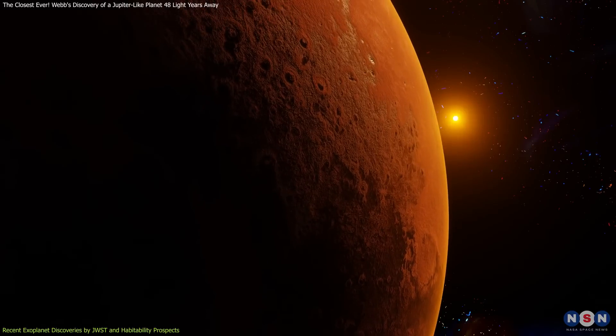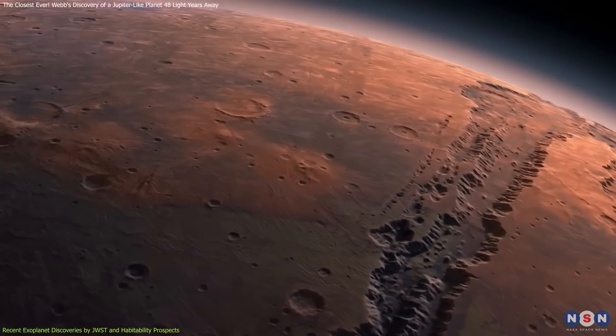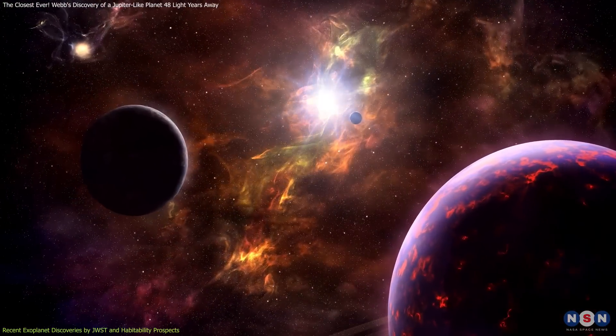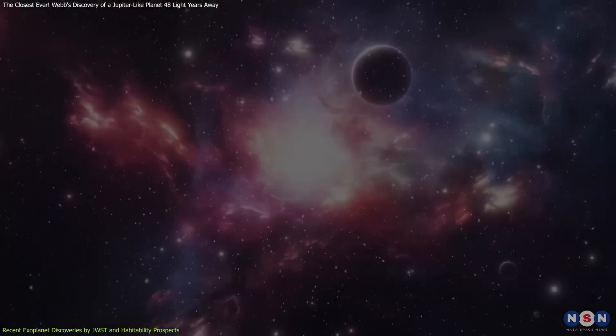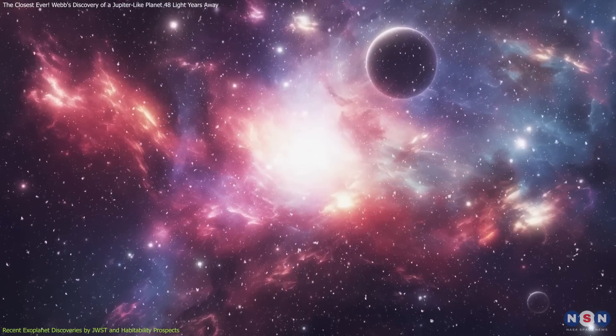The habitability of an exoplanet is influenced by a myriad of factors, with temperature, atmospheric composition, and distance from the host star being among the most crucial. These elements determine not just the potential for life, but also the type of life that might exist.